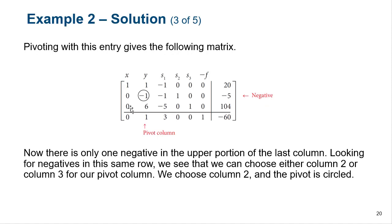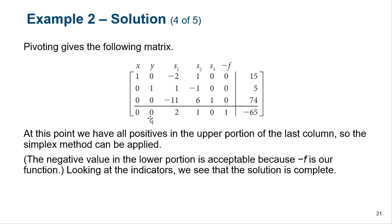We get this resulting column. We still have a negative here, so we have to pivot again. We could choose either one, but we don't want to pivot on a slack, so we want to pivot on the Y instead. We do the same thing: add it here, multiply it by 6 and add it here, then multiply by negative one to eliminate it. This is our resulting augmented matrix. Now that we've eliminated all the negatives in the upper portion of the augment column, we're good to go.